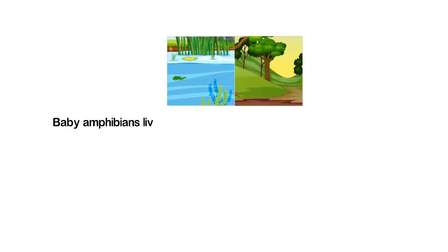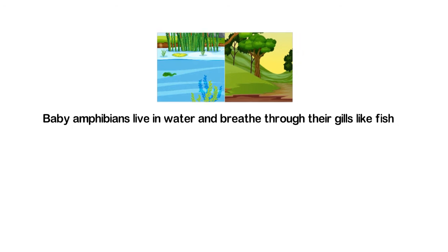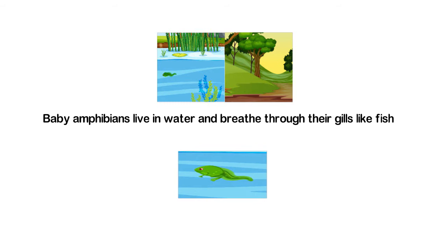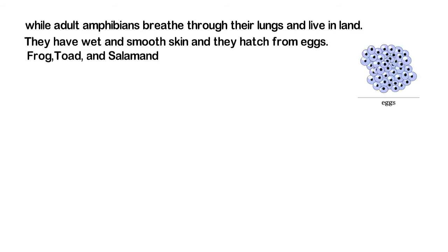Baby amphibians live in water and breathe through their gills like fish, while adult amphibians breathe through their lungs and live on land. They have wet and smooth skin, and they hatch from eggs. Frog, toad, and salamander are examples of amphibians.